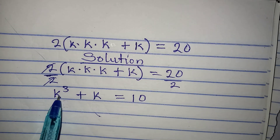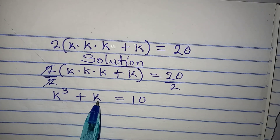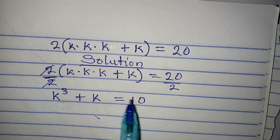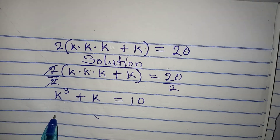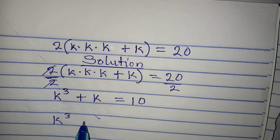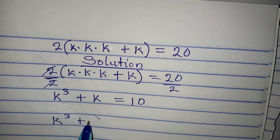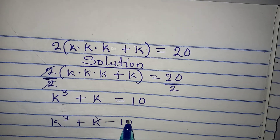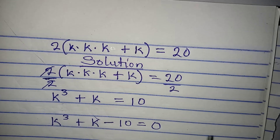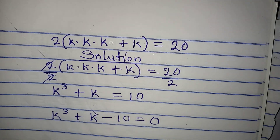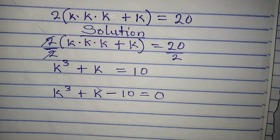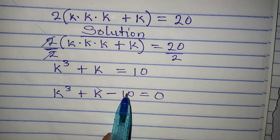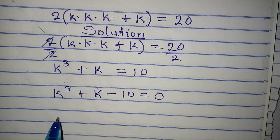We cannot add k³ plus k because they are not the same thing, but we can bring 10 to the left so that we have k³ plus k minus 10 equal to zero. Now we will try to factorize it by splitting 10 into 2 parts.